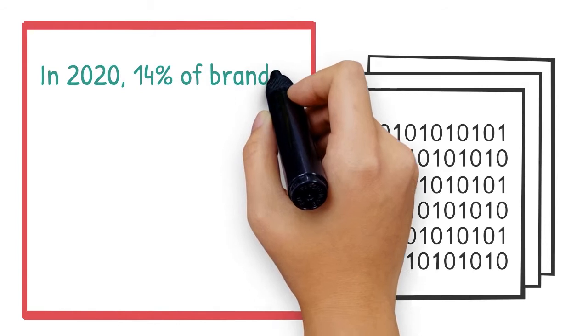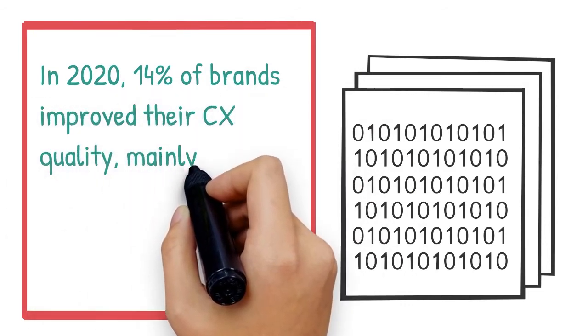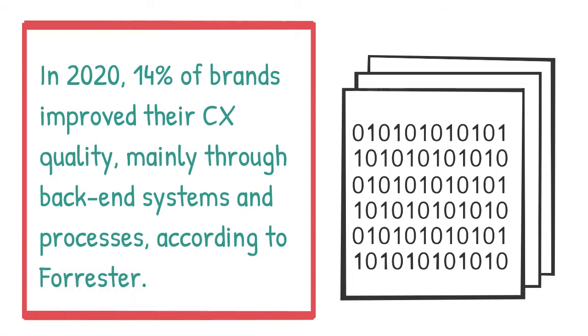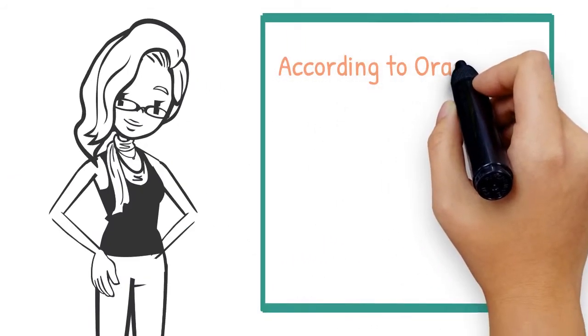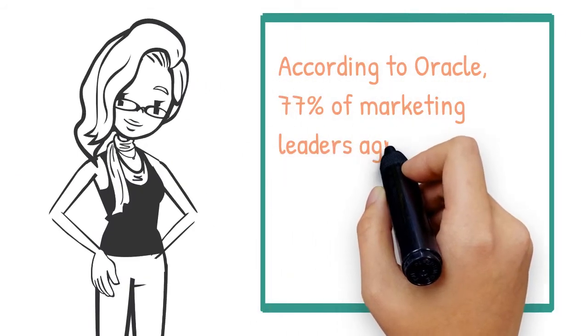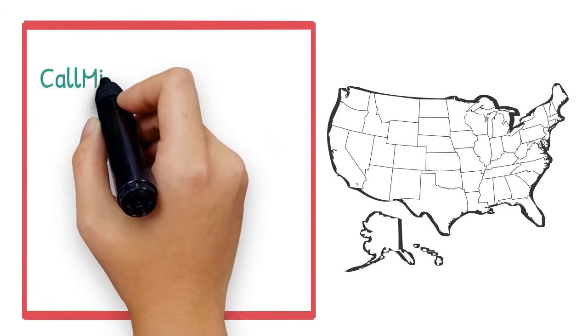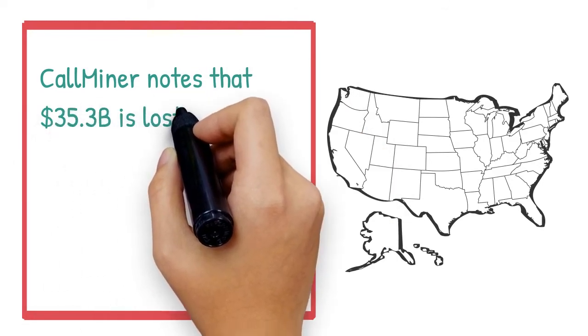In 2020, 14% of brands improved their CX quality, mainly through back-end systems and processes, according to Forrester. According to Oracle, 77% of marketing leaders agree or strongly agree that they use automation to improve CX.